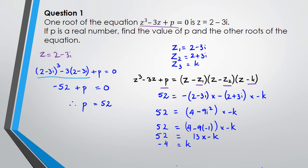So the three roots are: root 1 is 2 - 3i, root 2 is 2 + 3i, and the third root is -4. And that's how you do this question.